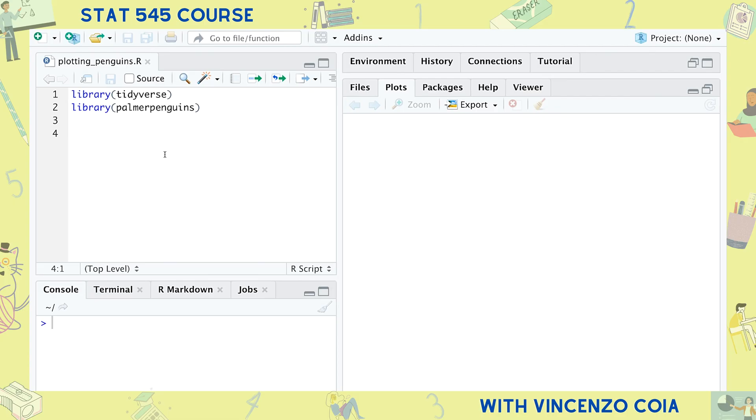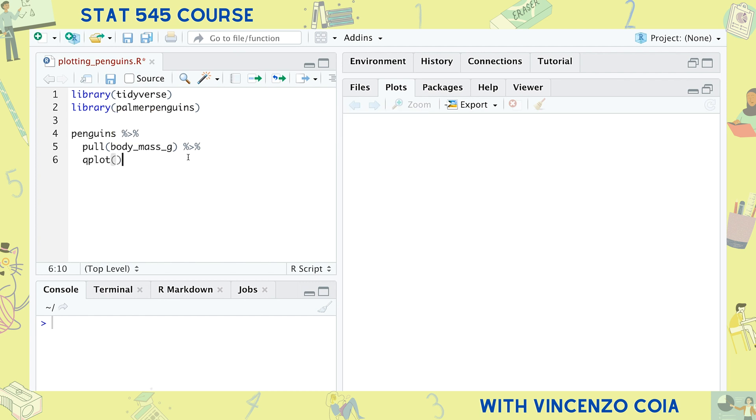Aside from the ggplot function, you can also make a plot using the qplot function. It stands for quick plot and has limited functionality, but it helps you make a plot with minimal code. You should probably only use quick plot if you want to take a quick glance at your data, not if you want to produce a lasting plot, so we won't be delving into it.